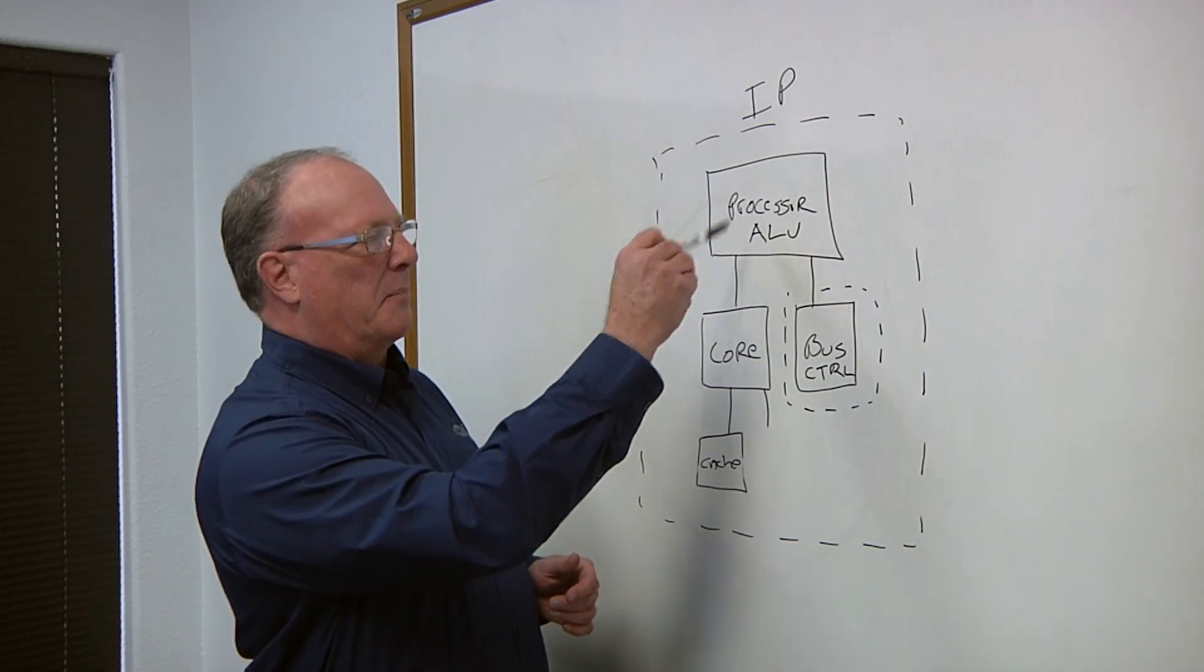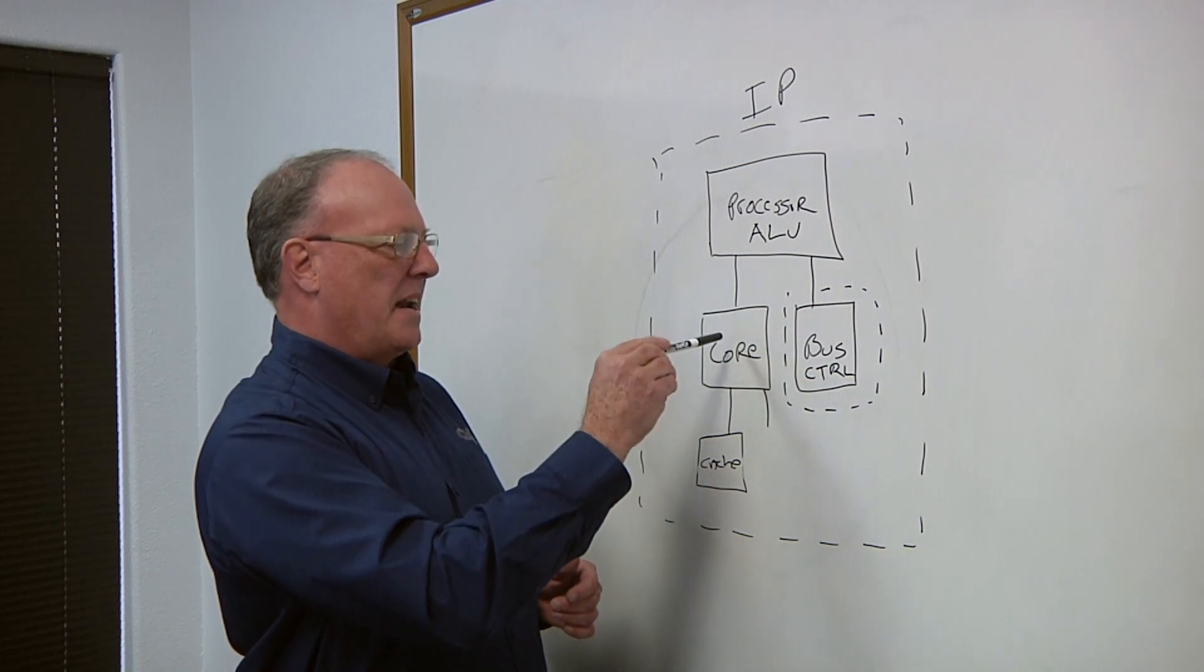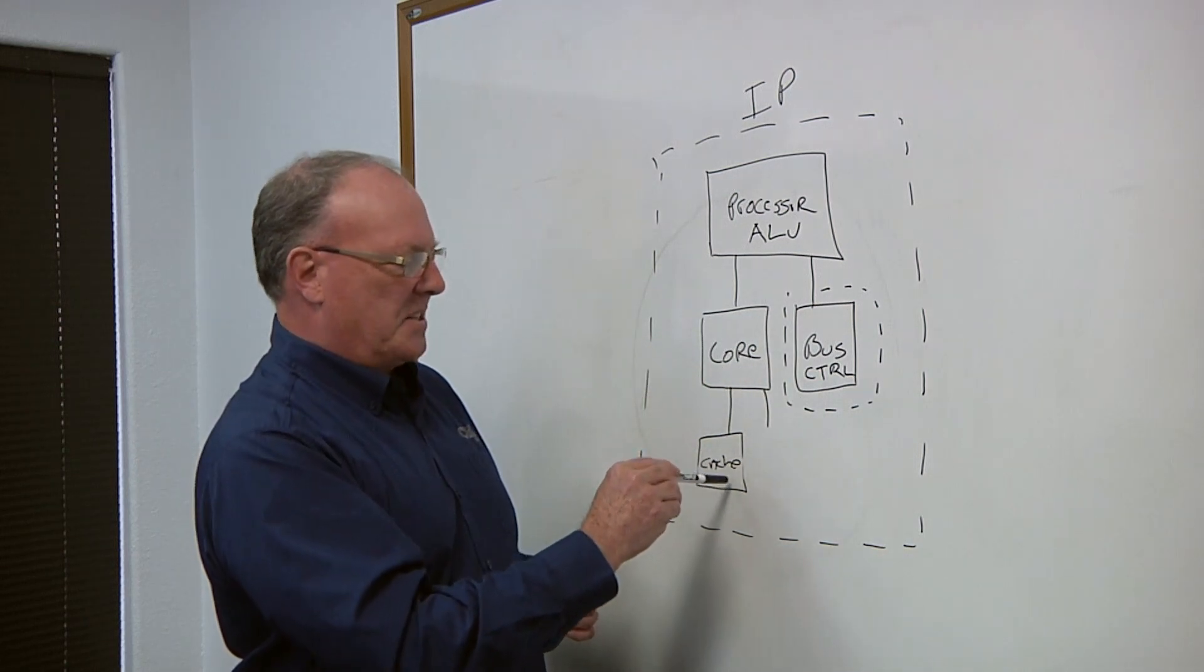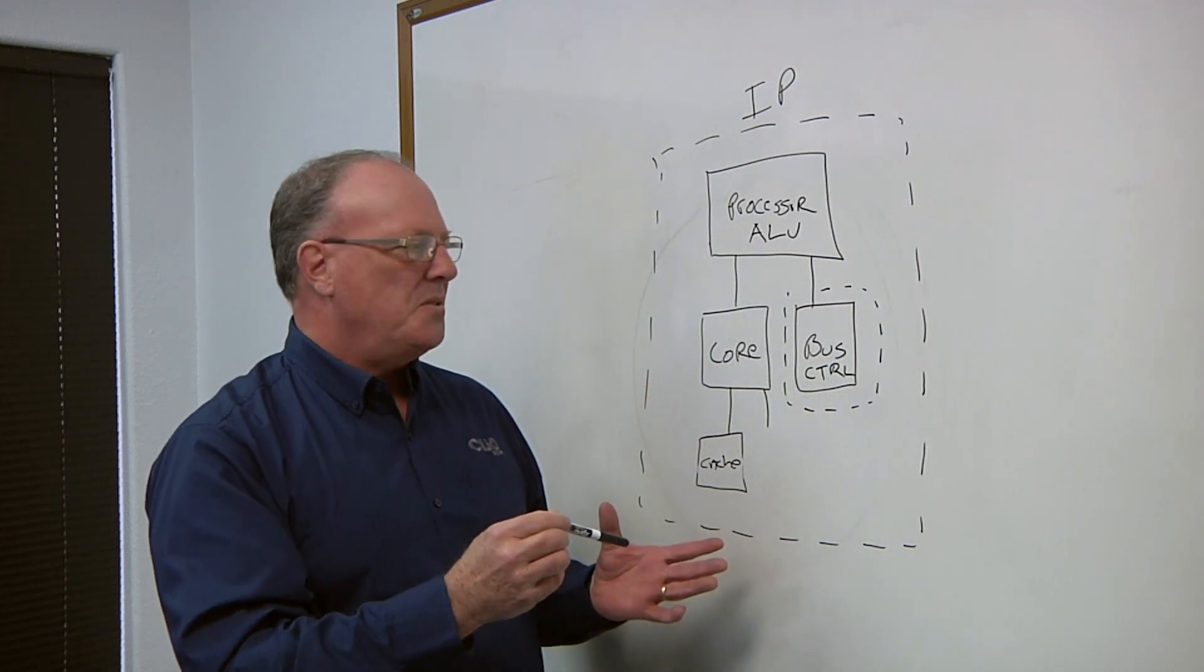For an example, it may be like a processor. So, you may have a processor ALU, and then how many cores it actually uses, and then the cache size that it uses, and it may have different bus controllers. Some of these may be options that you can choose.